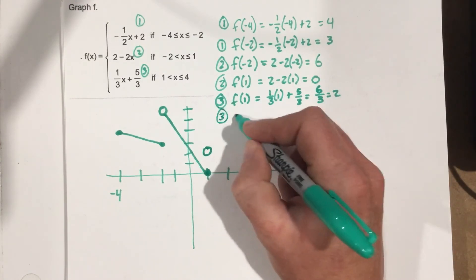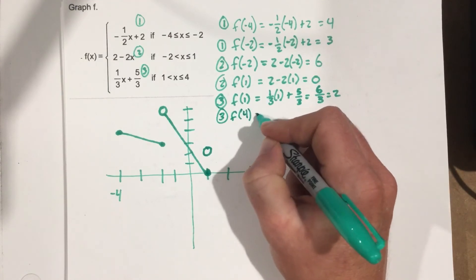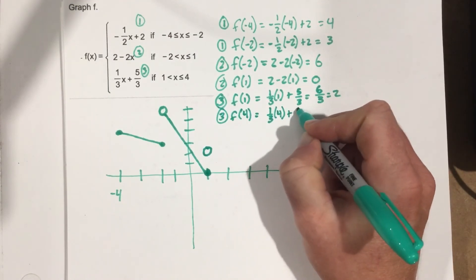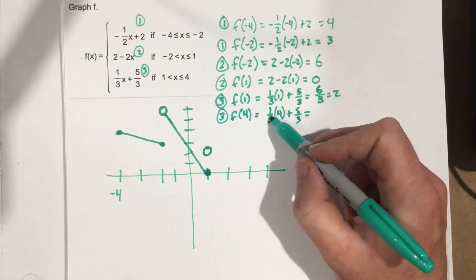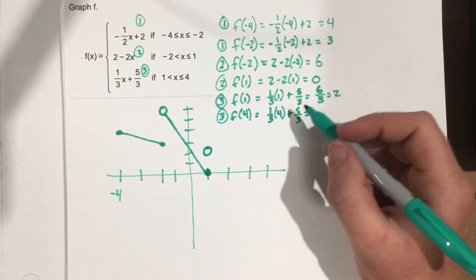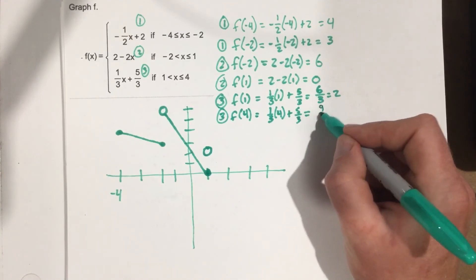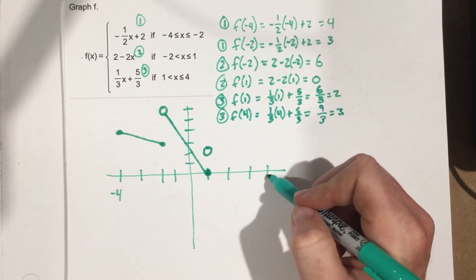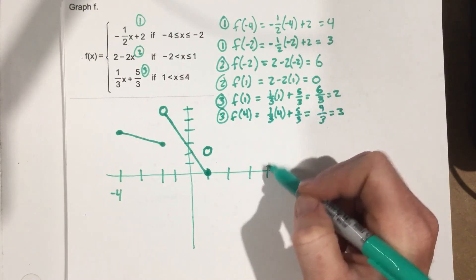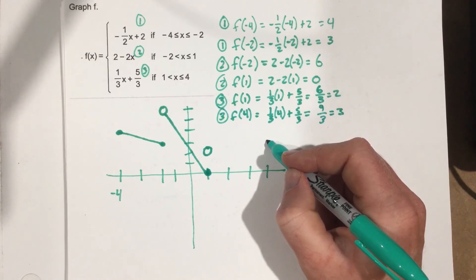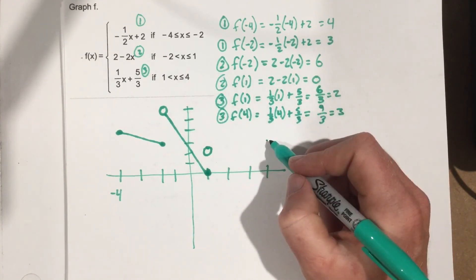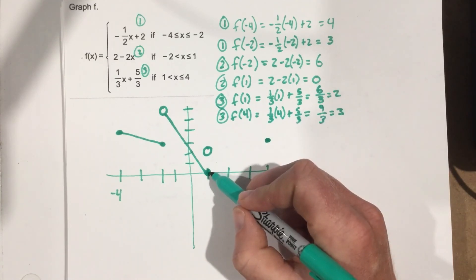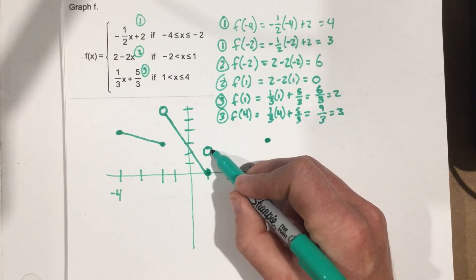Now let's do this for f of 4. 1 third times 4 plus 5 thirds. 1 third times 4 is going to give you 4 thirds plus 5 thirds is 9 thirds, which is 3. So we get 4, 3. 1, 2, 3. Yeah, so 1, 2, 3, 4. 3 is right here. This is a closed dot because it says equal to. So I'm going to go right here. 4, 3. And I can connect those. This right here.